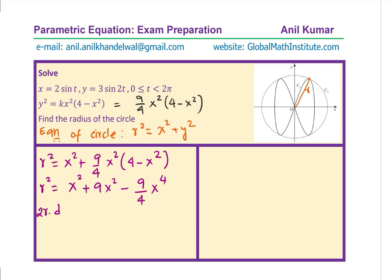We get 2r dr/dx equals to 2x plus 18x minus 9x³. For critical number, this should be equal to 0, right? We can equate this to 0 and then find the answer.